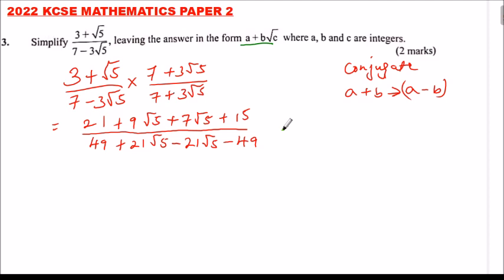This equals, we add the whole numbers: 21 plus 15 gives us 36. 9√5 plus 7√5 gives us plus 16√5. We divide by, you note that 21√5 minus 21√5 you get 0, so we subtract 49.